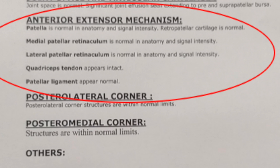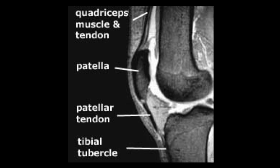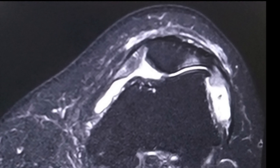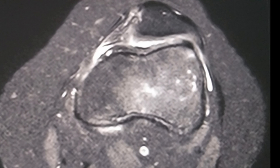Next in the format comes the anterior extensor mechanism. In sagittal planes, we look at the quadriceps tendon, the position of the patella whether it is normal, the patellar tendon and its attachment, and any pathology at the tibial attachment in the tibial tubercle region. In the axial plane, we clearly see the retropatellar cartilage and various gradings of chondromalacia patella — whether there is full-thickness cartilage loss and whether the underlying patella shows changes. We also see the medial and lateral patellar retinaculum.